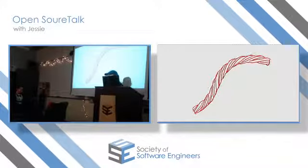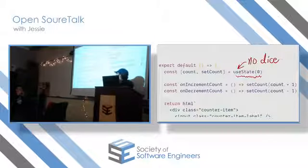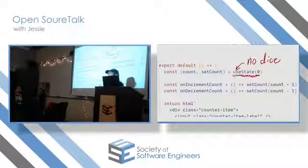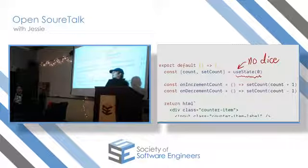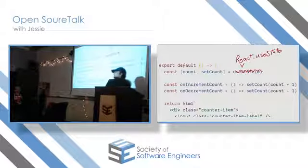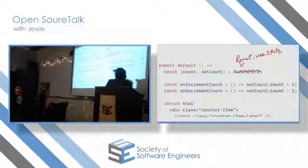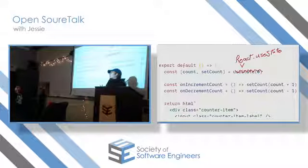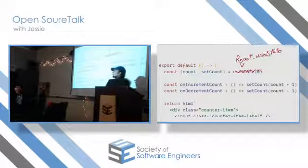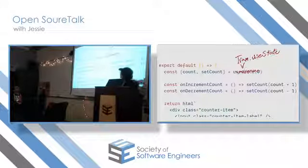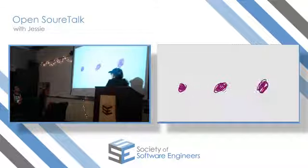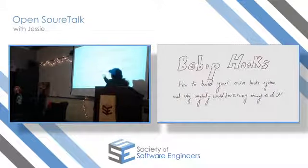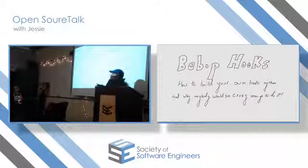For a lot of people, even just using React or using hooks in React was a pretty significant twist. For me, if I wanted to start using hooks — a fairly new addition to React — I wouldn't just be able to import useState and start running with it. All my projects were on TramOne. Instead, I'd probably have to start converting some of my projects to React. But I really liked TramOne. Maybe I could do one better — I could build my own hooks for TramOne. So, without further ado, I'm going to talk about Bebop hooks: how to build your own hook system, and why anybody would be crazy enough to do it.